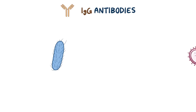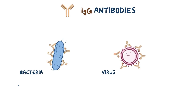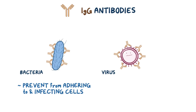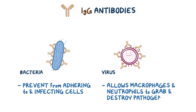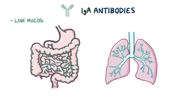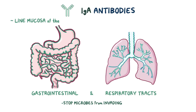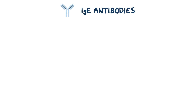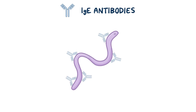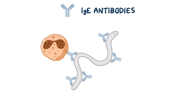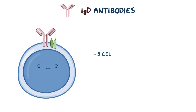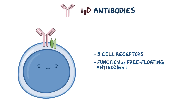IgG antibodies stick to the surface of bacteria and viruses, and that prevents them from adhering to and infecting cells. IgG also allows macrophages and neutrophils to grab and destroy the microbes. IgA antibodies line the mucosal tissues like the gastrointestinal and respiratory tracts and stop microbes from invading in the first place. IgE antibodies work with eosinophils to destroy parasites. As for IgD antibodies, they're also used in some B-cell receptors, just like IgMs are, but their function as free-floating antibodies is still unclear.